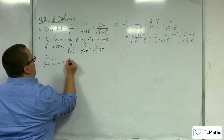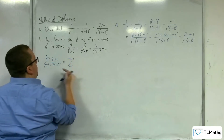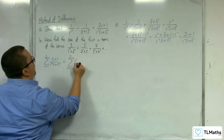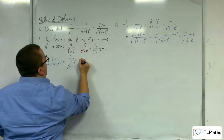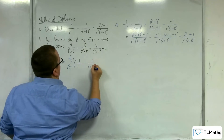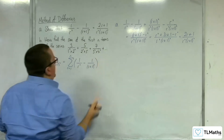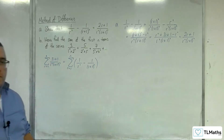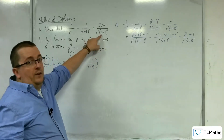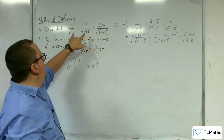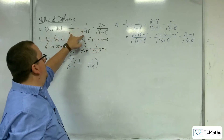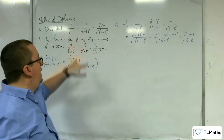We have shown in part A that we can rewrite this fraction as 1 over r squared take away 1 over r plus 1 squared. Instead of starting with that and going through partial fractions to get there — as in the previous video — we've done it the opposite way around: shown that expression equals that, and now we're going to use that result.